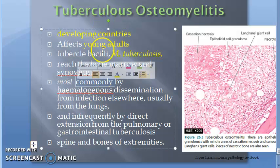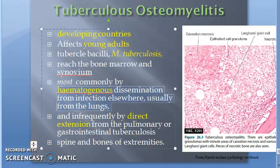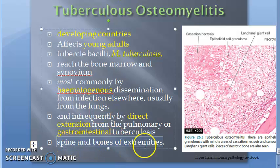The bacilli reach the bone marrow and synovium hematogenously, usually spreading from the lungs. It can also reach by direct extension — hematogenous spread is typically from the lungs, while direct extension can occur from gastrointestinal tuberculosis.